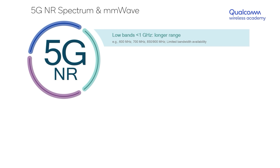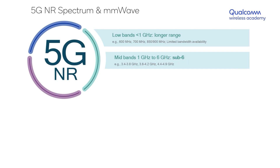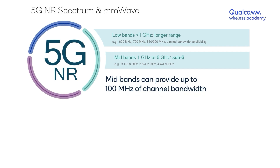5G provides a first option in the form of a frequency band between 1 and 6 gigahertz, also known as sub-6 gigahertz. The most prominent sub-6 gigahertz frequencies in which 5G is currently being deployed is the band from 3.4 to 3.8 gigahertz. In such frequency bands, the channel bandwidth offering tends to be slightly wider, such as 100 megahertz, for example.